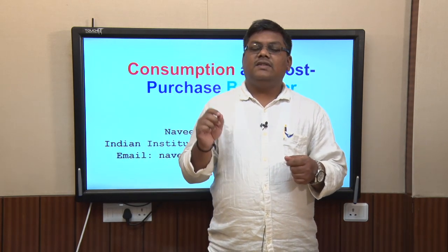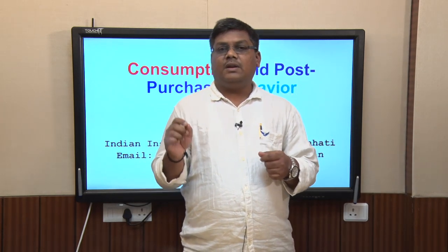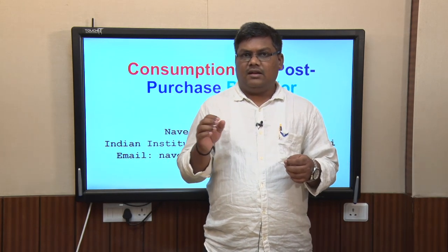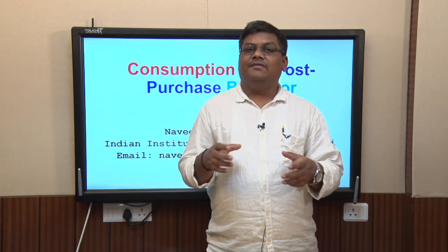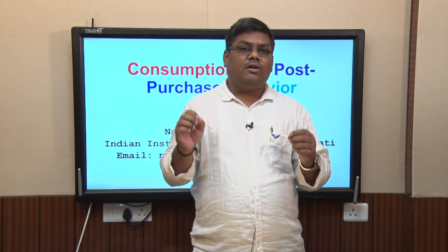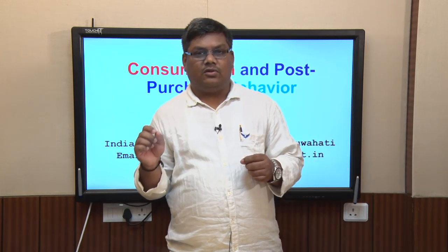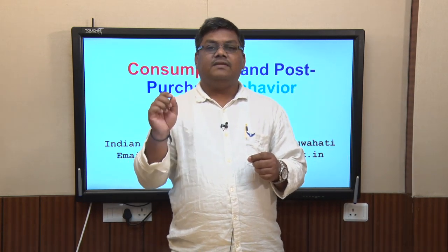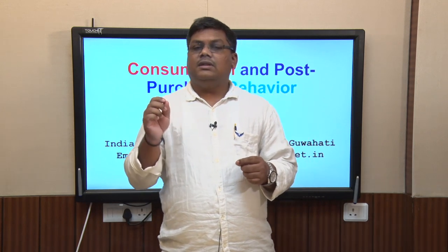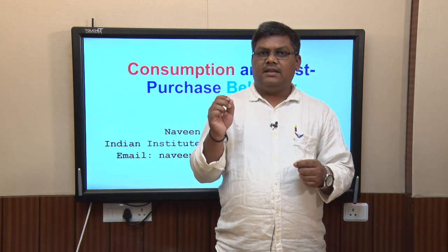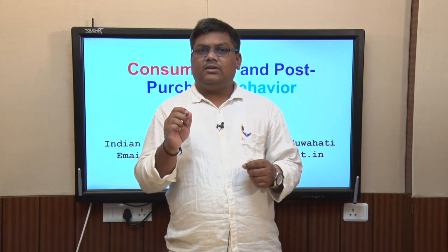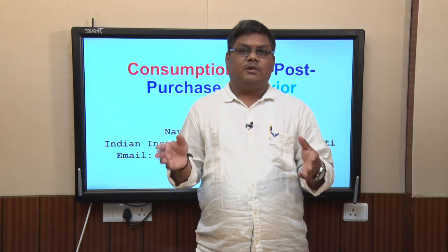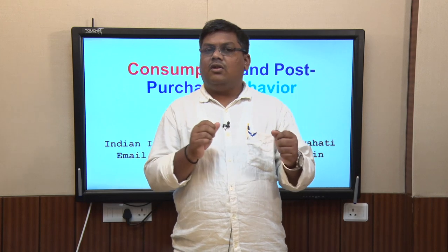We also discussed that once the consumer knows he has enough information about the product, he goes into the market and finds a number of products offering similar benefits. The question then is how does the consumer decide between what products to buy and what not to buy. The next step was alternate evaluation and choice, which was covered in lessons 5, 6, and 7, looking at the parameters and determinants the consumer uses to decide which product to buy.